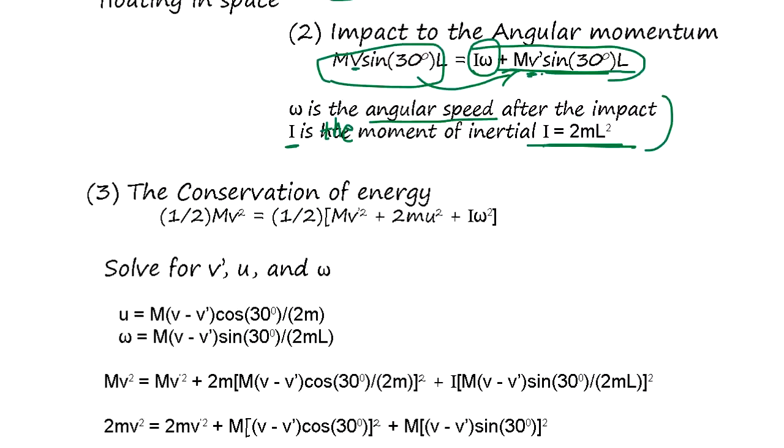This is conservation of energy. The original energy was one half of MV squared. Now the new speed MV prime squared plus 2MU squared plus I omega squared. Of course we have a coefficient here in front. So this gives a third equation. So we have one, two, three parameters.